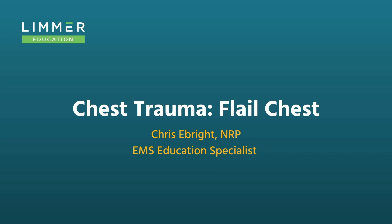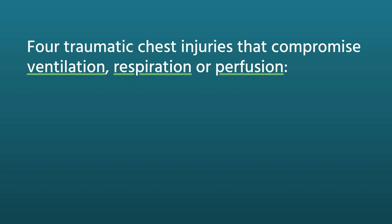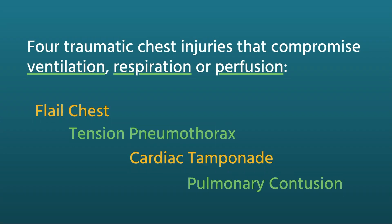Chest injury is the second most common type of traumatic injury. When you have a chest injury patient, there may be multiple systems involved. I'm going to focus on four of the major chest injuries that have an effect on either ventilation, perfusion, or respiration. Since those three processes are necessary to keep us alive, chest injuries that interrupt them are obviously very dangerous.